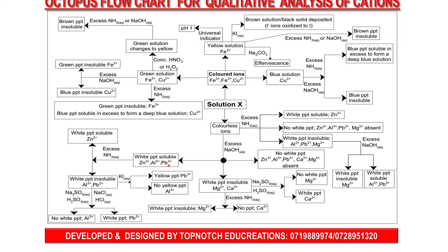Under qualitative analysis we use the elimination method, going on eliminating ions until the remaining one is identified. Now, in a scenario where after adding sodium hydroxide the observation is white precipitate soluble in excess — meaning ZAP ions are suspected — the next reagent to add is aqueous ammonia dropwise until in excess. If you get a white precipitate soluble in excess, the inference is zinc ions present.